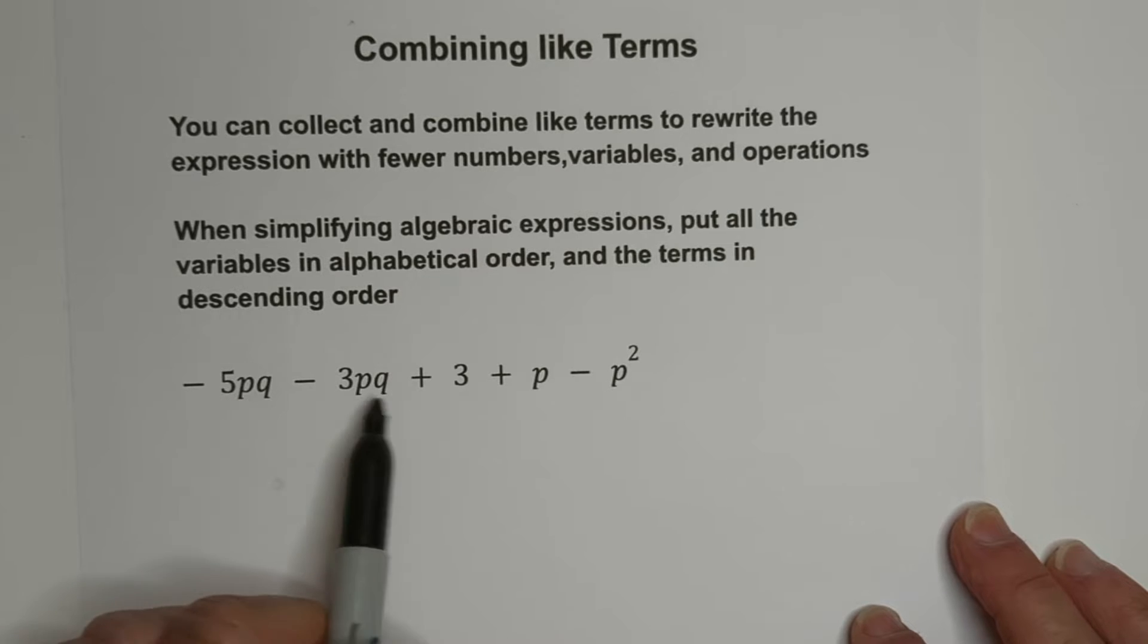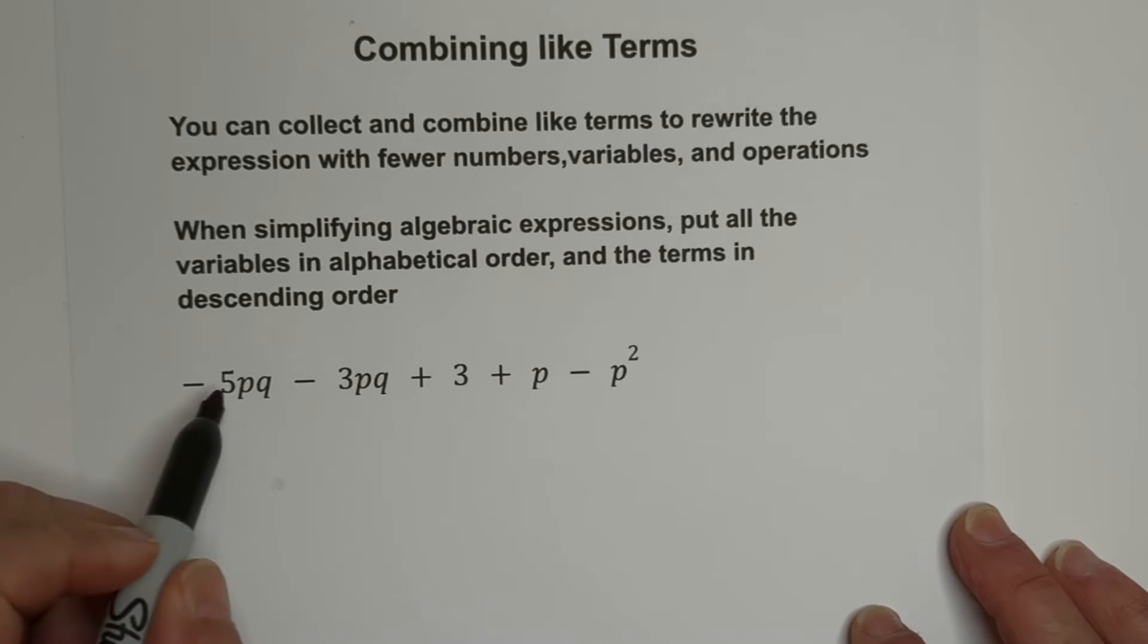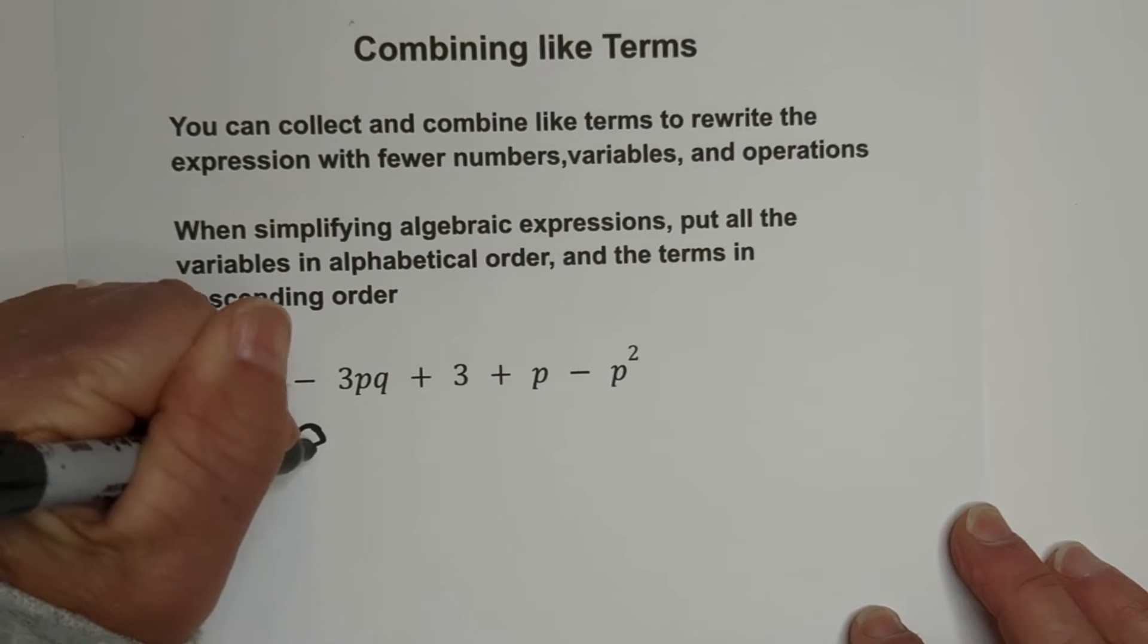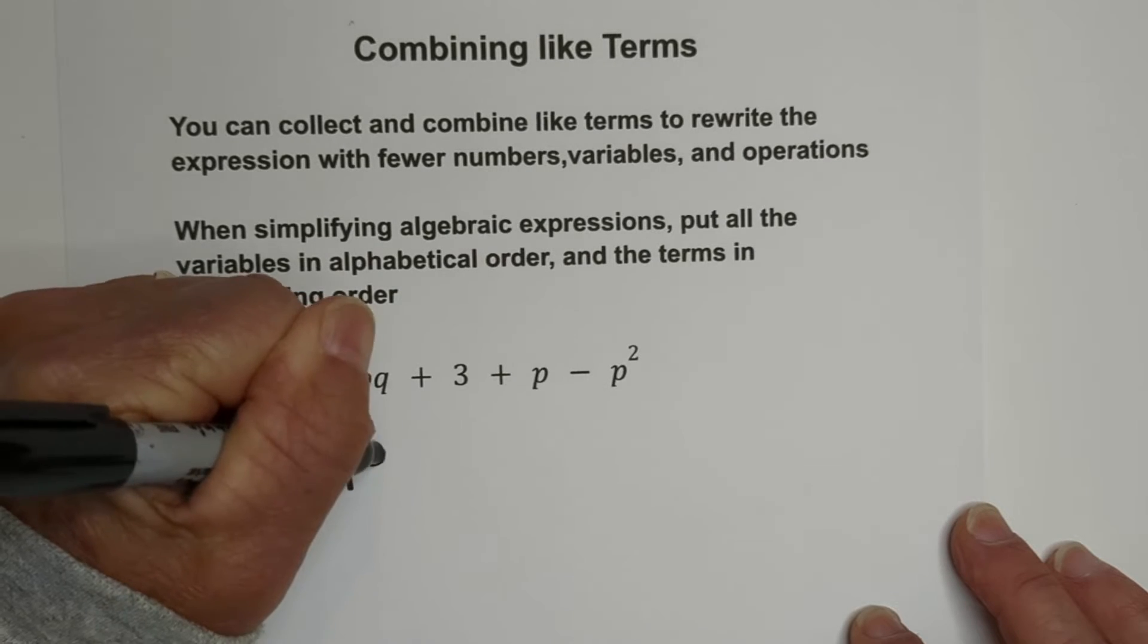We have PQ, which are like terms. The P is not the same, nor is the P squared. So let's combine these like terms. Negative five and negative three becomes negative eight PQ.